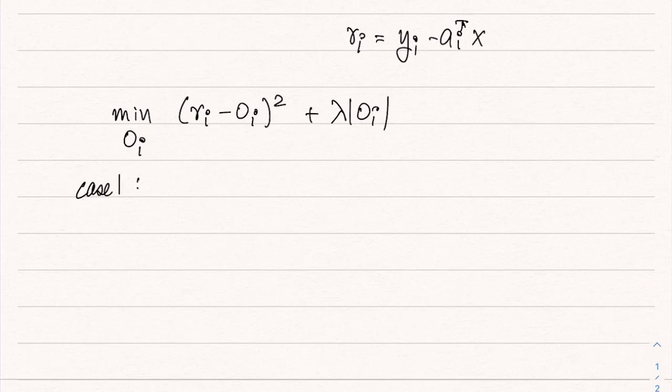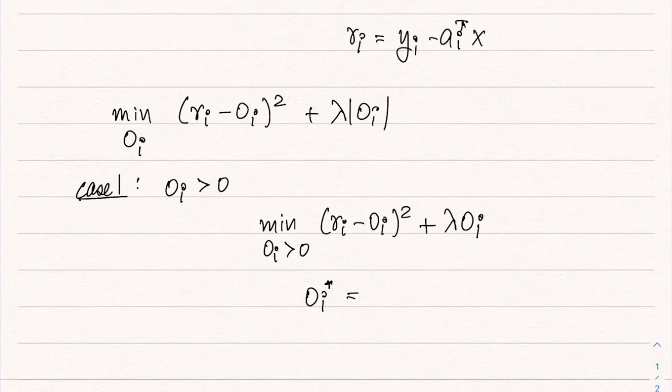Let us say that case 1 is, we don't know what O_i is, but let us assume anyway that the solution O_i is positive. So the solution of this is that O_i which is positive. Let us assume; if this assumption is not true then we will assume the other thing that O_i is negative. So if O_i is positive, this problem would basically be written as minimize over O_i positive (r_i minus O_i) squared plus lambda times O_i. And this is a simple quadratic problem. So O_i star here would be equal to r_i minus lambda by 2.